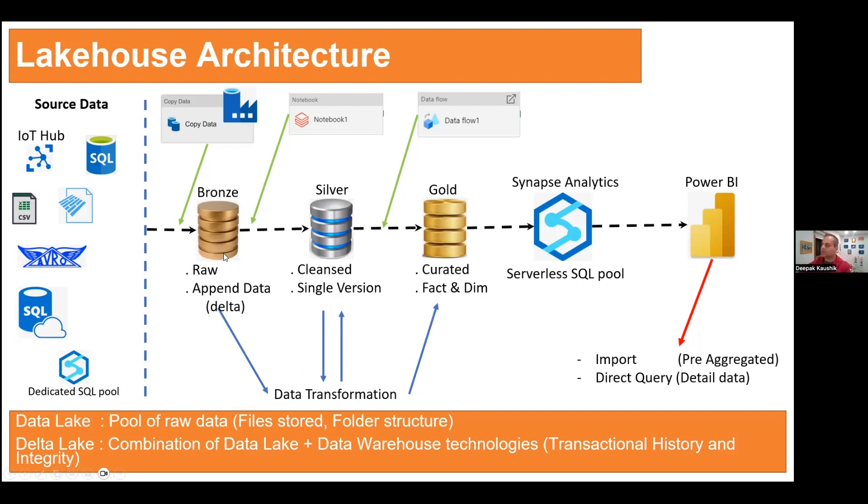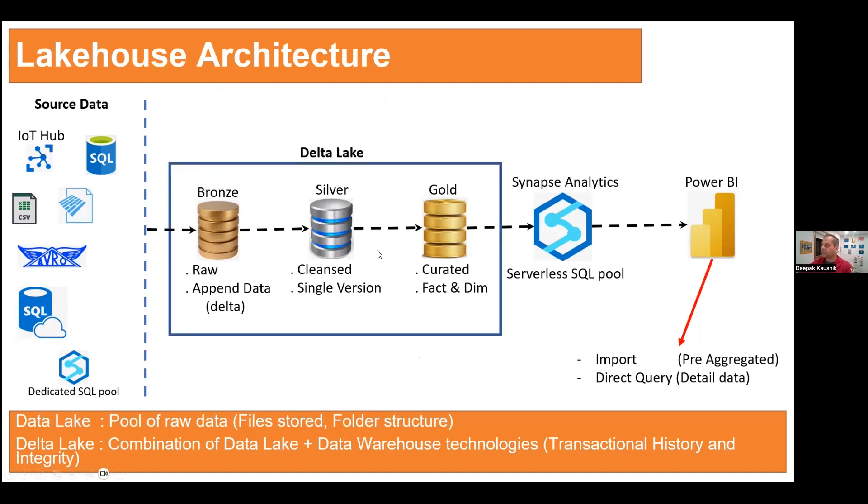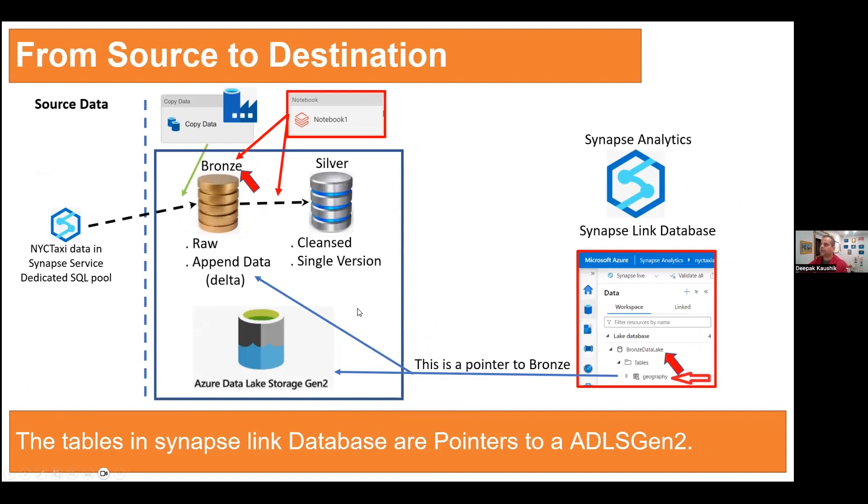Whatever the source we have on left side, IoT hub, SQL, flat file, Avro, SQL, you take the name, it does not matter. Whatever we have in source, we need to move the data into bronze. And it has raw and append data, which is called delta lake. And we moved the data from ADLS using Azure Data Factory. Once we have data in bronze, we push the data, which is the cleaner version and single version into the silver with the help of our logic, which is a notebook. And furthermore, we push the data into the gold, which is curated and fact data.